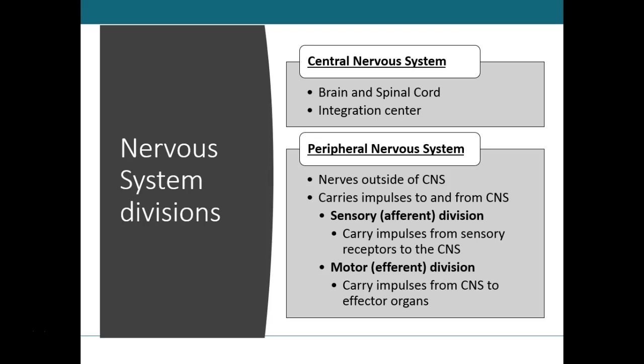The motor division of the peripheral nervous system is known as the efferent — 'E' for exit — and carries impulses from the central nervous system out to effectors, which are muscles and glands. This division is further divided into the somatic nervous system and the autonomic system. The central nervous system is the integration center for the brain and spinal cord, while the peripheral nervous system carries information to and from the central nervous system.